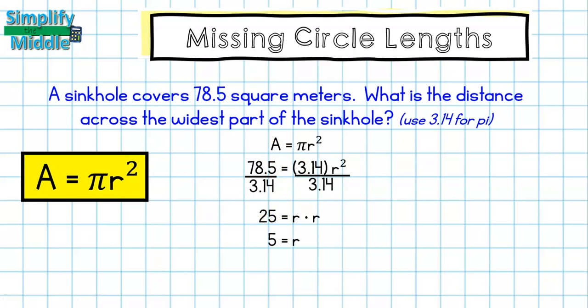So I have a radius of 5 but I want the diameter. So my last step is to multiply by 2. So in this case, the distance across the widest part of the sinkhole is 10 meters.